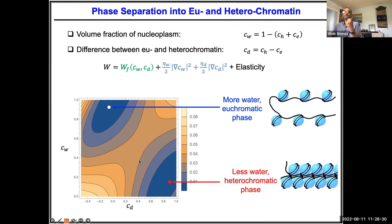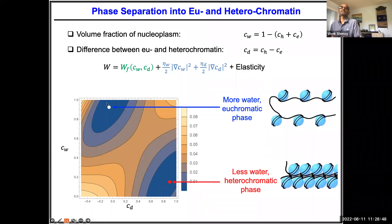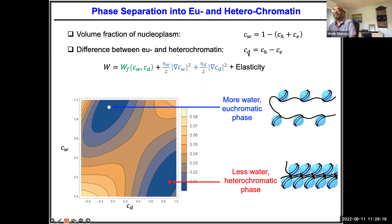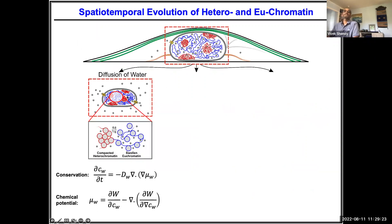In a typical cell there's roughly 50% water and roughly equal amounts of eu- and heterochromatin, so you're in the unstable region of the energy landscape and you want to phase separate. The question is: what's the dynamics of this phase separation? Starting from some random state, where do the stable steady states end up? To understand that, you need to know the dynamics for water and for the hetero/euchromatic order parameter.